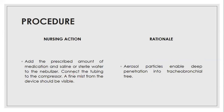Then, add the prescribed amount of medication — it may be Duolin or Budecort, but follow the doctor's order. Add the medication along with saline or sterile water to the nebulizer cup. We can use either saline or sterile water with the medication. Sometimes we can provide medication alone. Then connect with tubing to the compressor — a fine mist from the device should be visible.